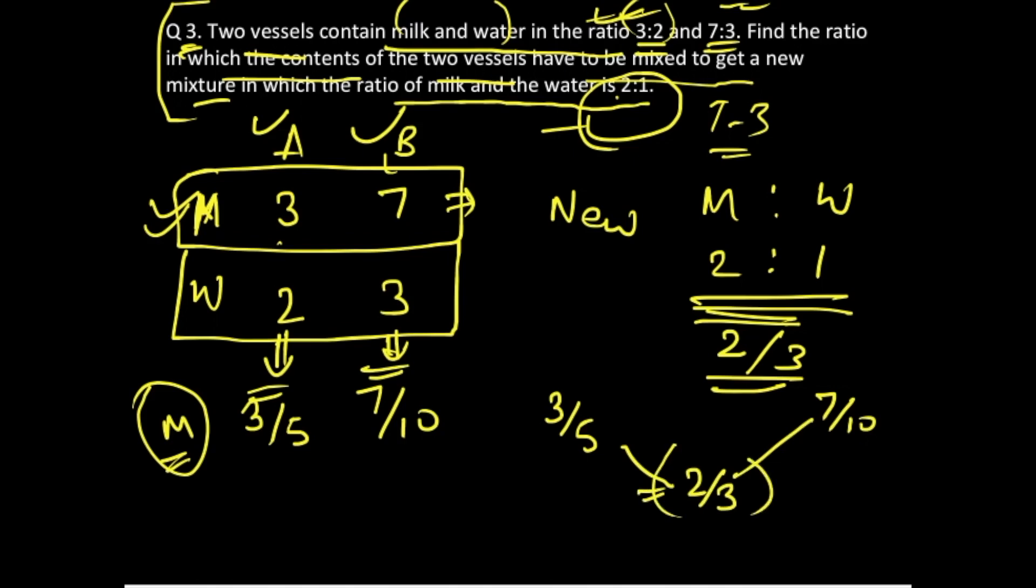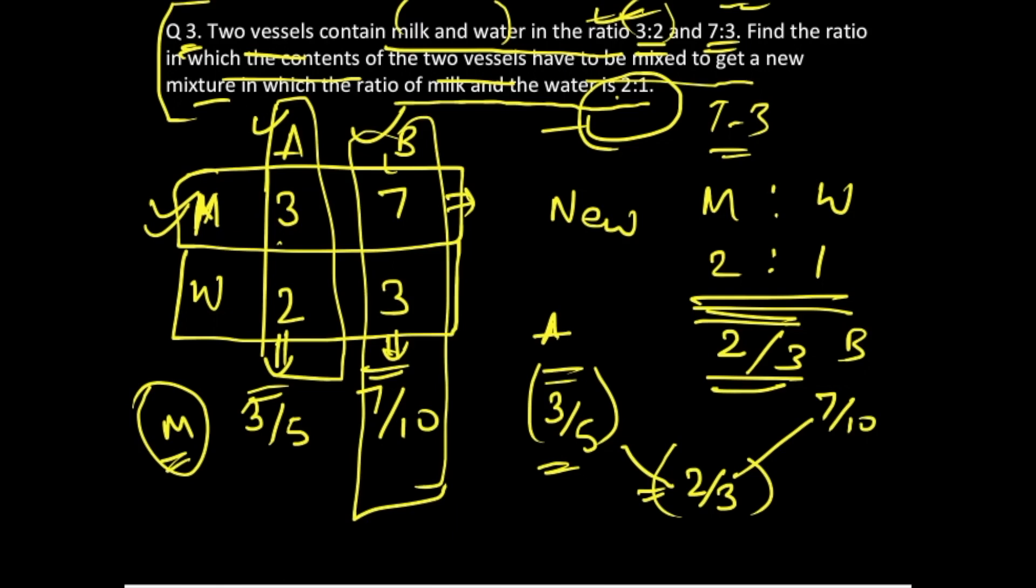This we are considering for vessel A because this is 3 parts over 5, and this is for B, 7 parts over 10.